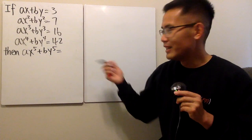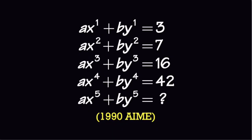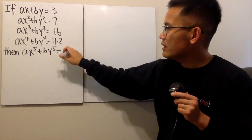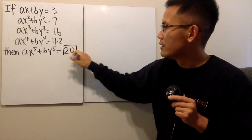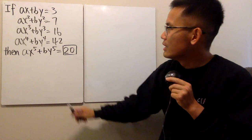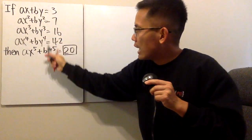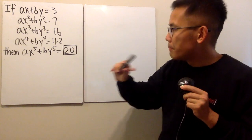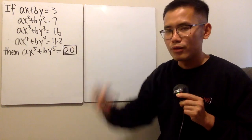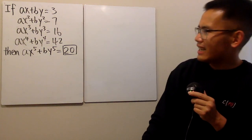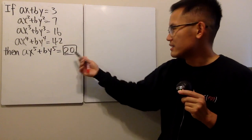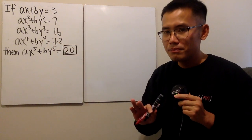Please pause the video and try first. The answer to this is 20 — it's very nice but also very weird, because you can see that all the powers are going up and these numbers are going up, but from the fourth to the fifth power the answer actually goes down. Why is that? I think it's really hard to just look at these numbers and figure out the pattern.